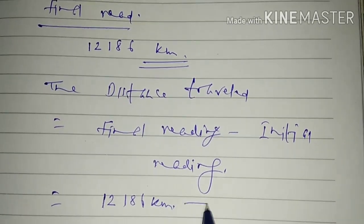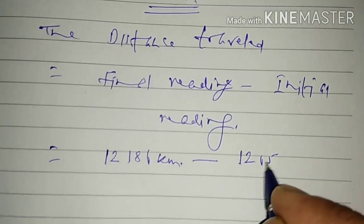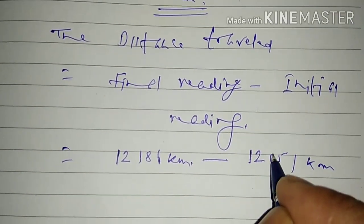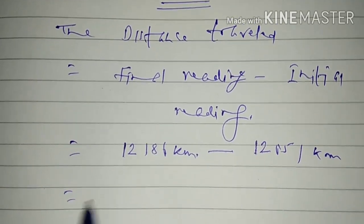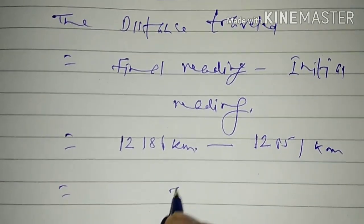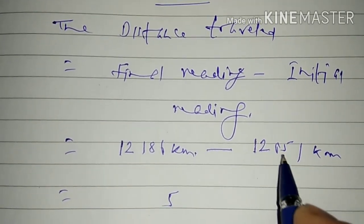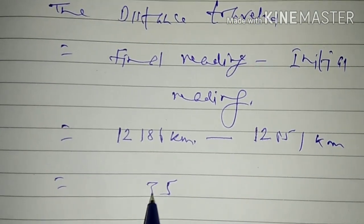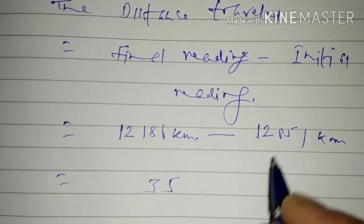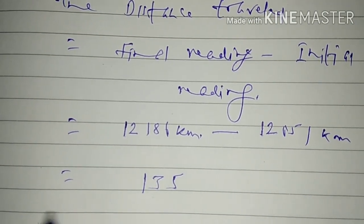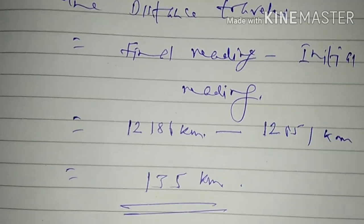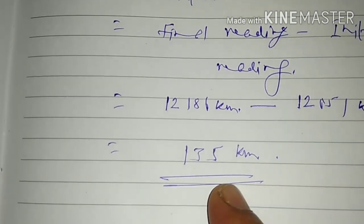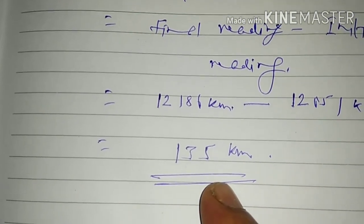This is equal to final reading 12,186 kilometers, and what is initial reading? 12,051 kilometers. So 6 minus 1, 8 minus 5, that is 3, and 1 minus 0 is 1. So the distance traveled by that vehicle is 135 kilometers.